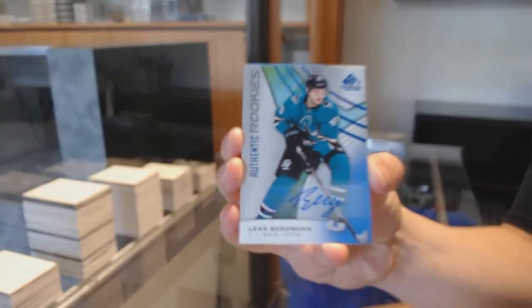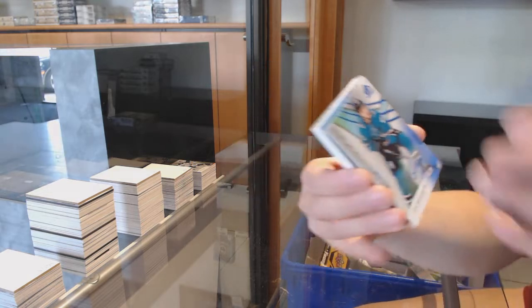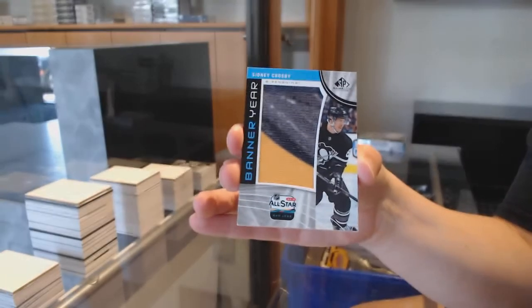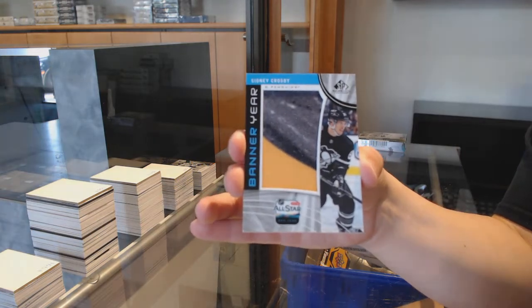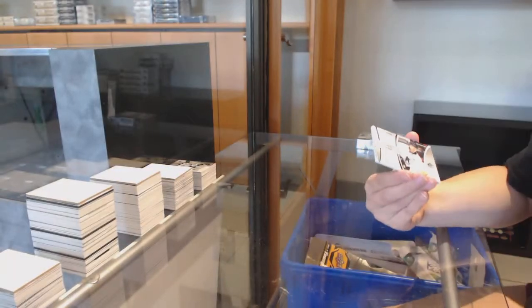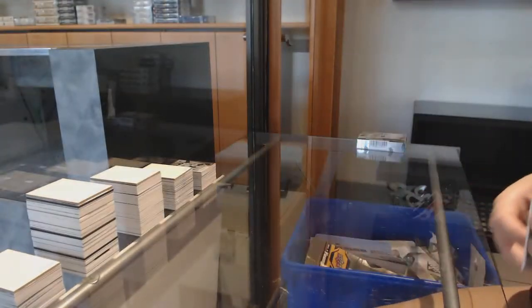Rookie blue auto for the San Jose Sharks, Lean Bergmann. Banner here for Pittsburgh, Sidney Crosby. Not specifically that I know of, Dylan, but we might do box chances in the future. For sure. And Miro Heiskanen for the Dallas Stars Showcase Standouts. And a rookie jersey for Florida, Brady Keeper.